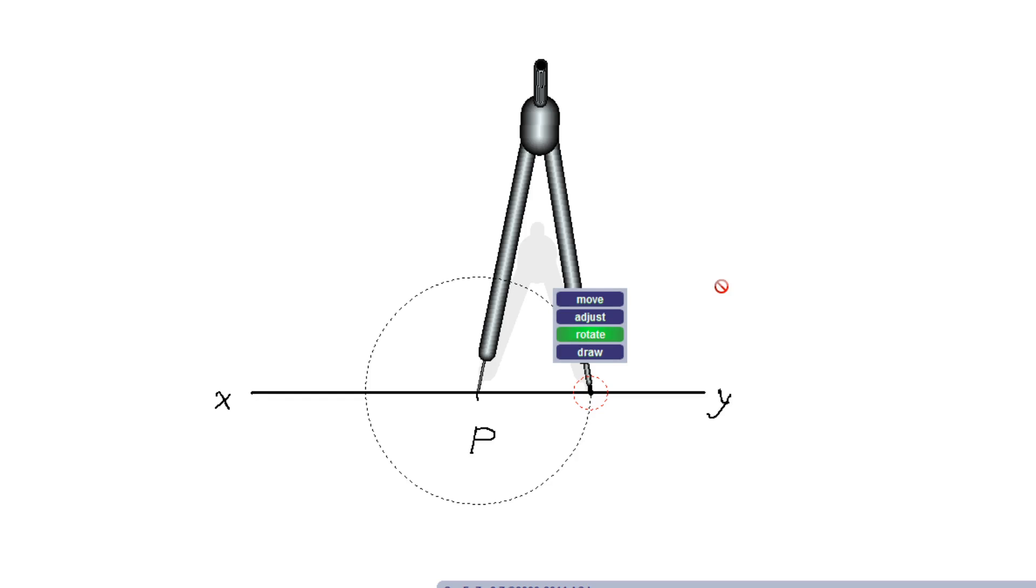In this lecture, our objective is to draw a perpendicular on a given point on a given line. We have a line XY and there is a point P. Let us assume that point P is very close to the center of line XY. To do that, first we have to draw two arcs, one on the side of X and another on the side of Y.